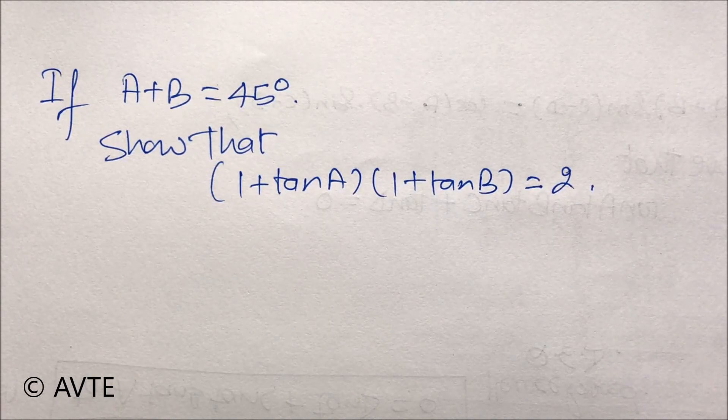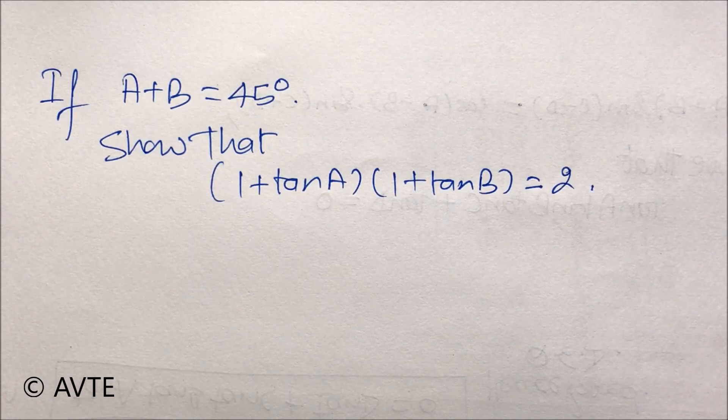If A + B is equal to 45 degrees or π/4, then show that (1 + tan A)(1 + tan B) is equal to 2.